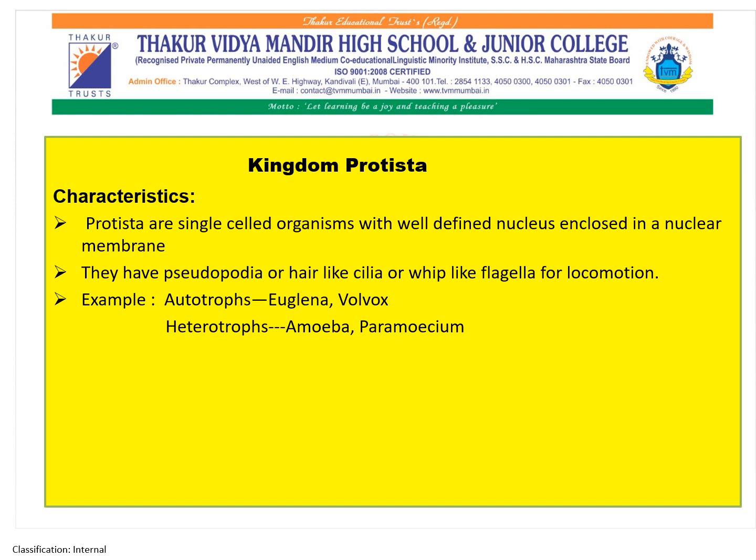Kingdom Protista are single-celled organisms with a well-defined nucleus enclosed in a nuclear membrane. They have pseudopodia, hair-like cilia, or whip-like flagella for locomotion, meaning movement. Examples: autotrophs — Euglena, Volvox; heterotrophs — Amoeba, Paramoecium. Autotrophs are organisms which can produce their own food, and heterotrophs are organisms which depend on others for food.